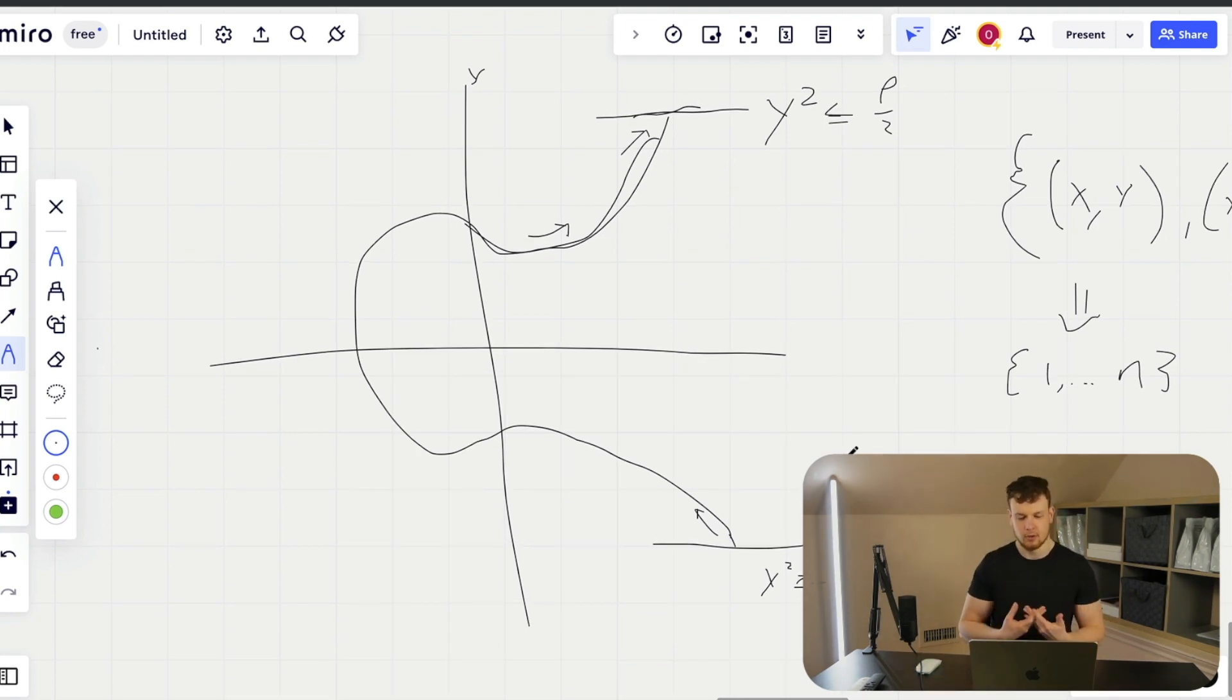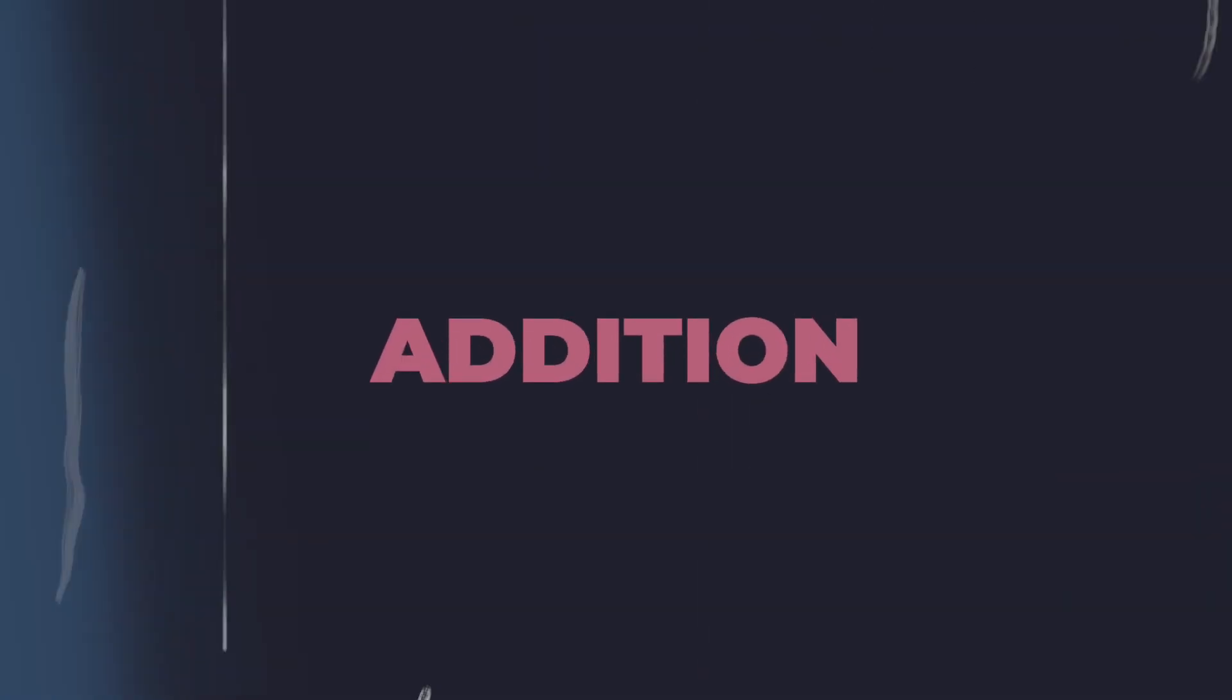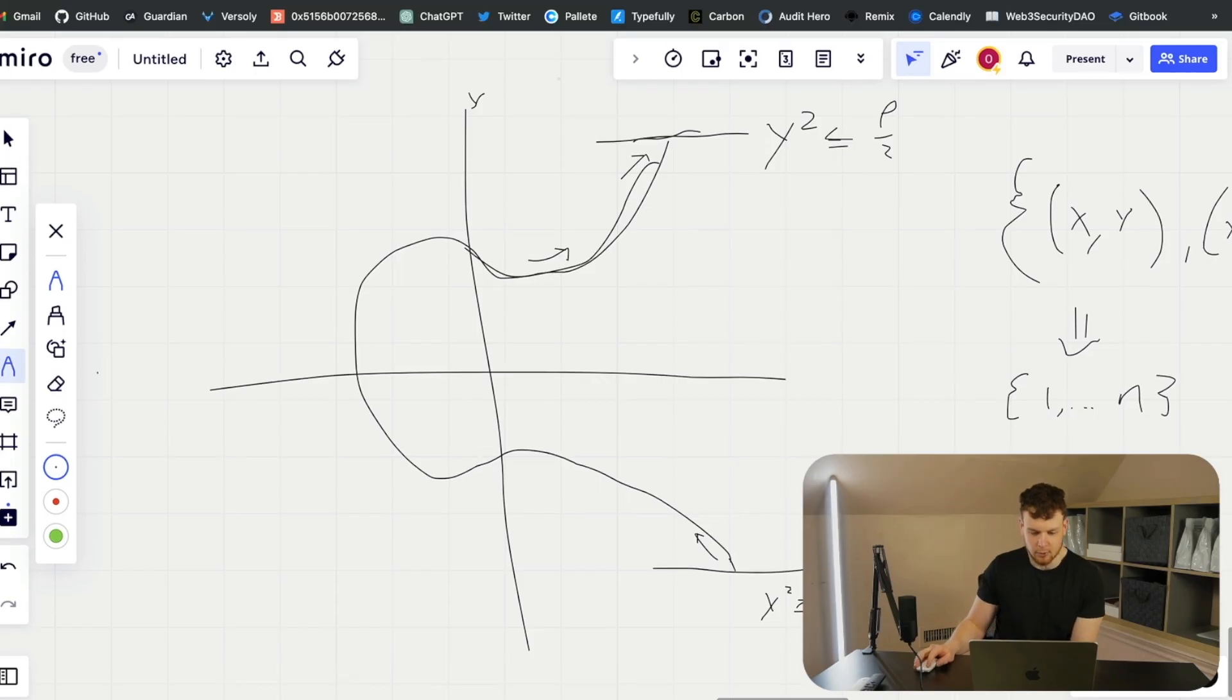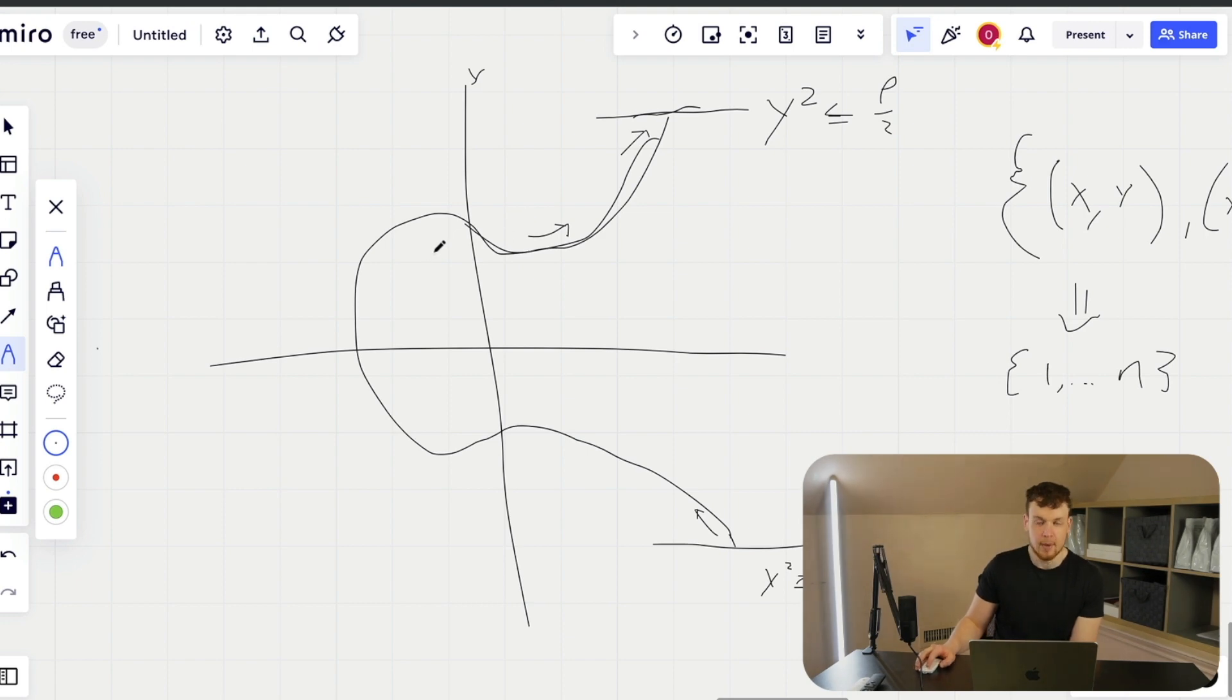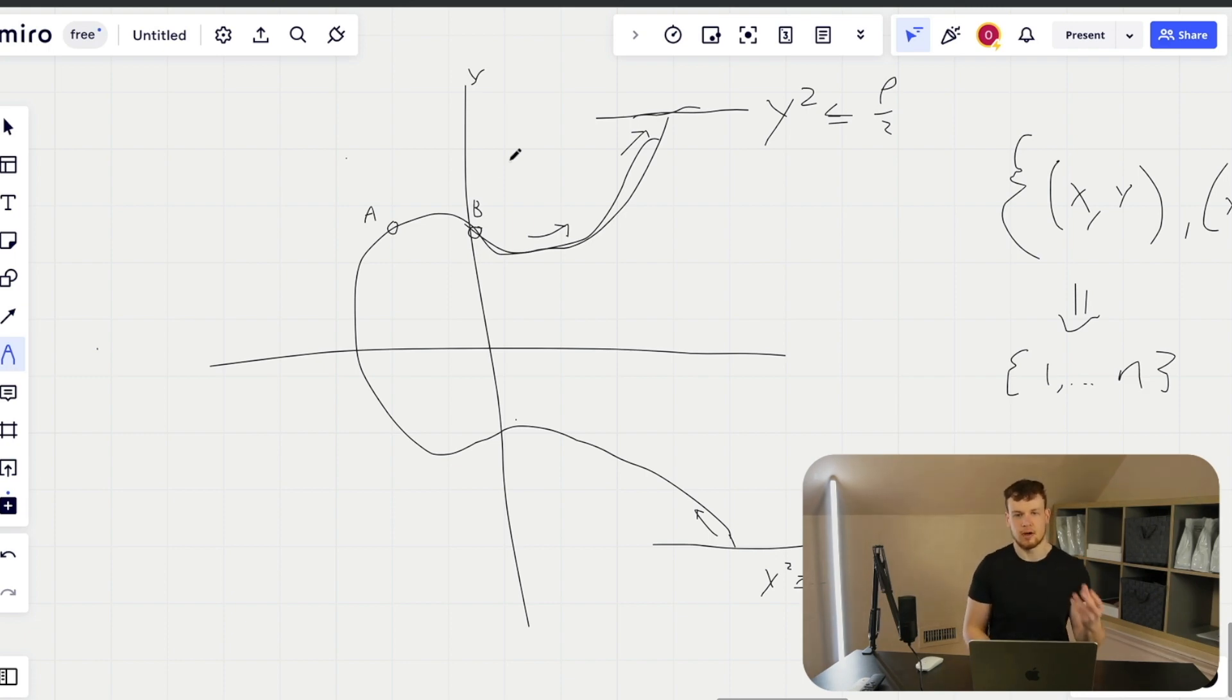So for this particular group, addition is defined as follows. We remember that every member of the group is a point on the elliptic curve. So let's take two points on the elliptic curve and let's add them together. So we're going to say that I have a point A, and we're going to say A is right here, and that's our point A. And then we're going to say that we have a point B, and B is right here.